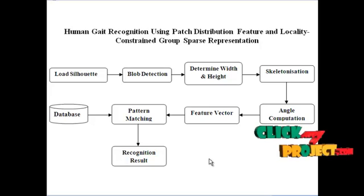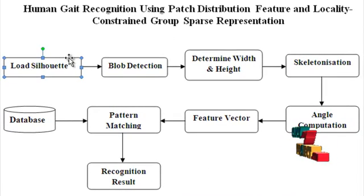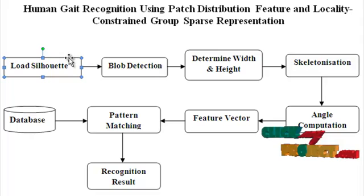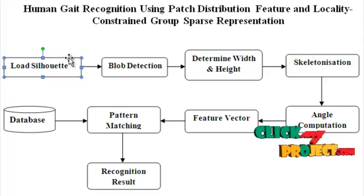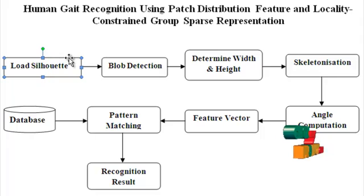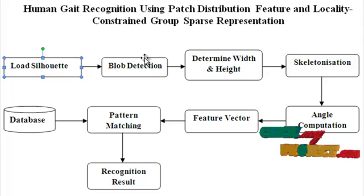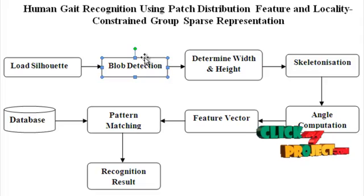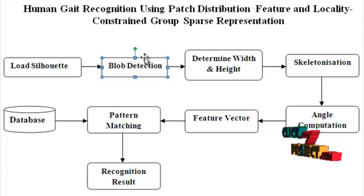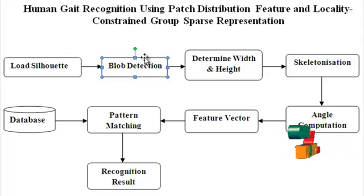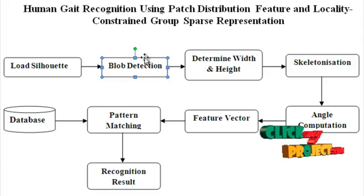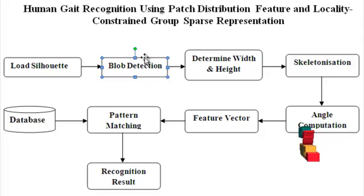Now let us see the explanation for the data flow diagram. The first block is 'Load Silhouette.' The given test silhouette sequence is loaded here — it consists of many silhouette frames, and each frame is processed separately in the following stages. Following this loading process, the next block is blob detection. Blob analysis is used to calculate statistics for labeled regions in a binary image.